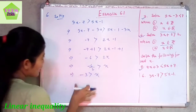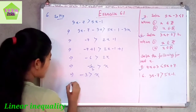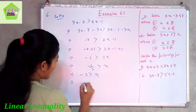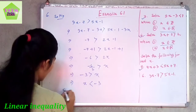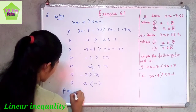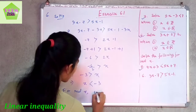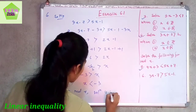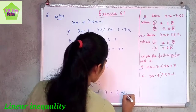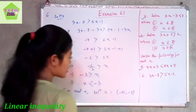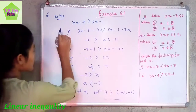For question number 6, finally we have got minus 3 greater than x, that is x less than minus 3. For the real value of x, the solution is the open interval minus infinity to minus 3. This is the solution for question number 6.